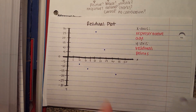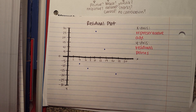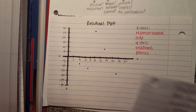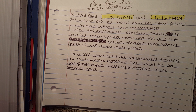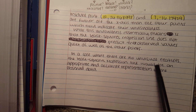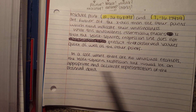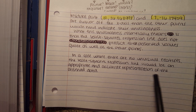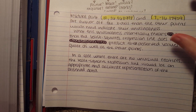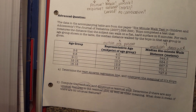In the case of the normal points that aren't considered unusual, in a case where there are no unusual features, the least squares regression line would be an appropriate and accurate representation of the observed data. And that wraps it up.